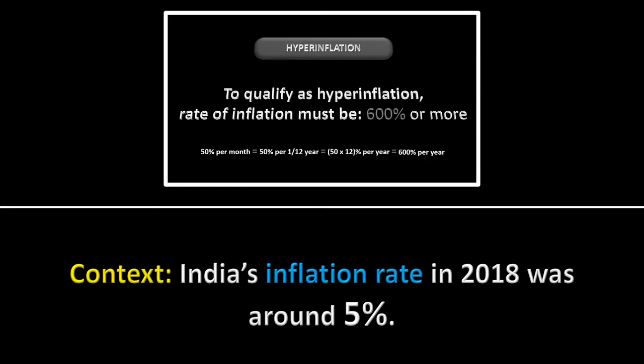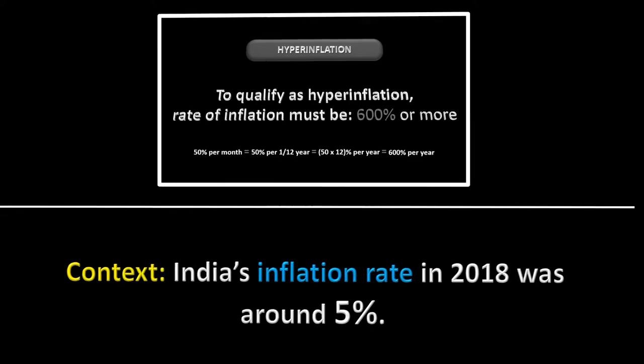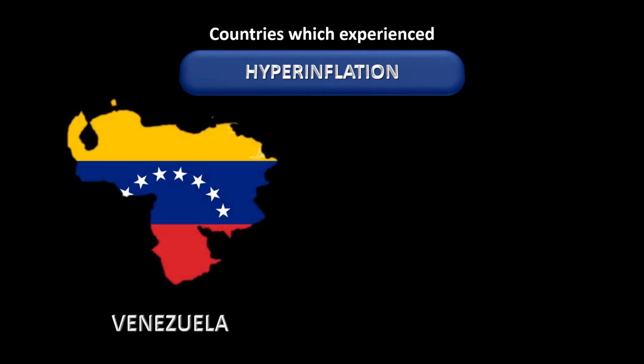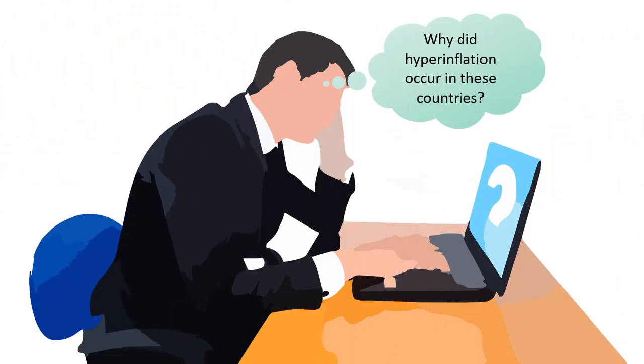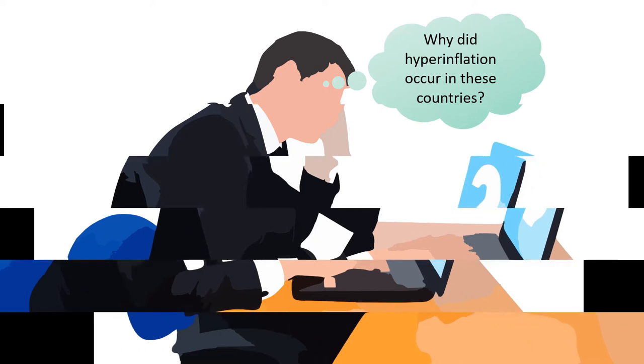So we see that hyperinflation is a very extreme case of inflation. Two countries that have experienced hyperinflation only recently are Venezuela and Zimbabwe. Let's see their cases and try to learn from them, starting with why hyperinflation occurred in these countries in the first place.